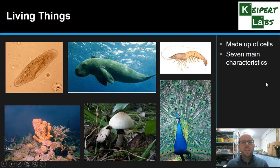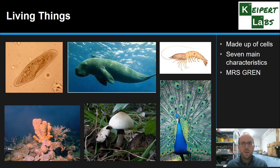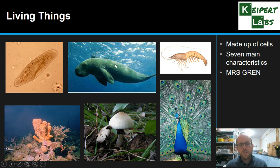All living things share seven main characteristics, and we have an acronym that helps us to remember what they are called — Mrs. Gren. In the next video we're going to unpack what each of these letters refers to, but the idea is that all living things share these seven main characteristics in some capacity. How that looks for a bacterium versus a dugong versus a peacock can vary, but they all share these things.